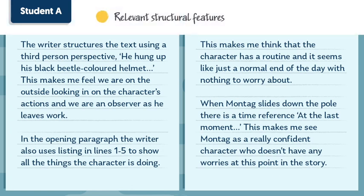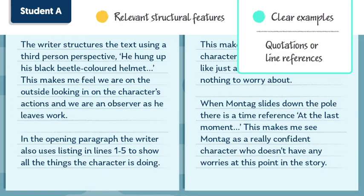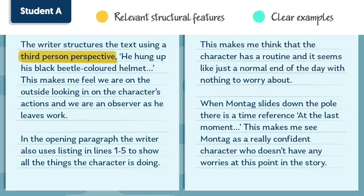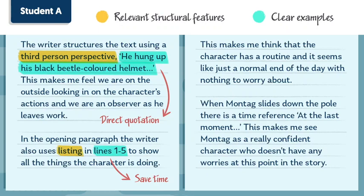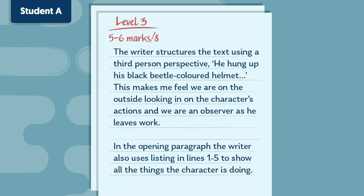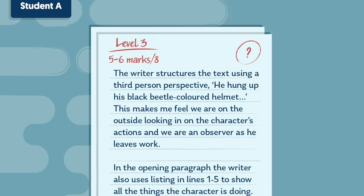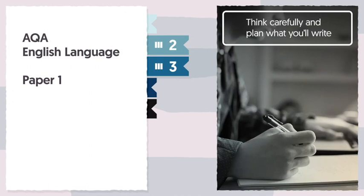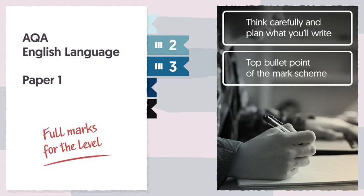Here the student has found some very relevant structural features and given clear examples, either by using quotations from the text or line references. For example, they've pointed out the third person narrative perspective and used a direct quotation: 'He hung up his black, beetle-coloured helmet' to prove this. Then they move on to identify that some listing has been used to structure the text. In this case, they pinpoint the lines where this has been done, which is a good way to save time by not copying out a lengthy quotation. This response would be awarded a level three from the mark scheme — but could they have done a little more?